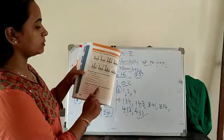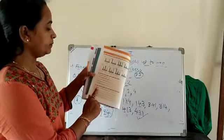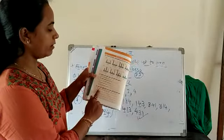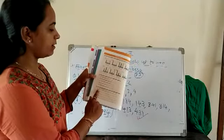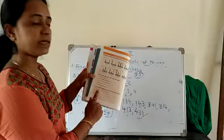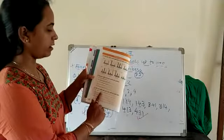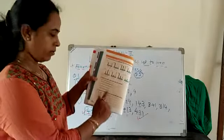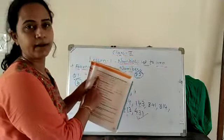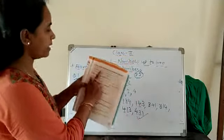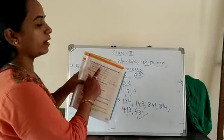Then, write the expanded forms of the numbers given below. I will explain a previous example. In expanded form, here is 815. Write the expanded form: 8 is in which place? 100. So here write 800. Plus, 1 is in the 10s place, so here write 10. Then 5 is in the 1s place, so 5. So 800 plus 10 plus 5. Complete this like this.